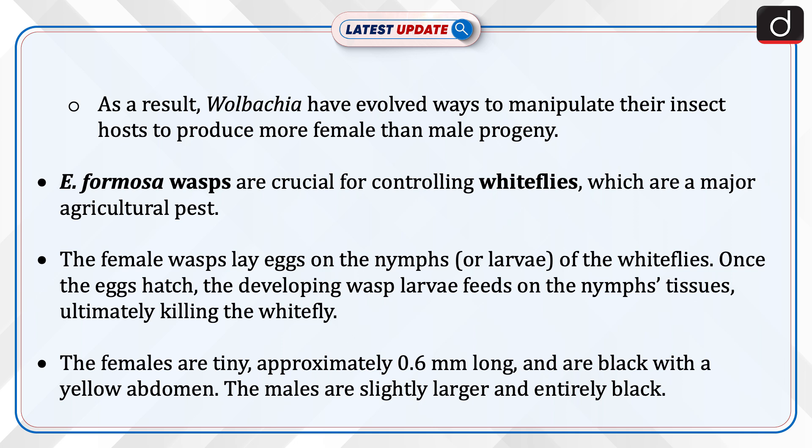The females are tiny, approximately 0.6 mm long, and are black with a yellow abdomen. The males are slightly larger and entirely black.